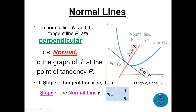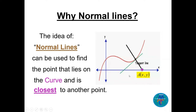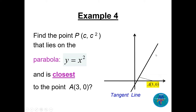Why do we use normal lines? If we have any curve, normal lines can be used to find the point on the curve closest to another point. For example, given an external point A, we need the closest point on the curve to A, and we use the normal line which is perpendicular to the tangent. Here's a nice example: find the point P = (c, c²) on the parabola y = x² closest to the point A = (3, 0).